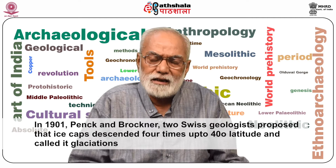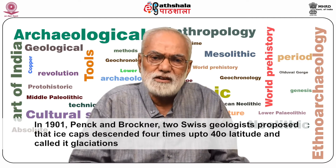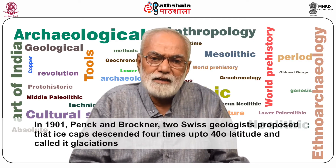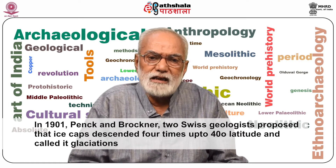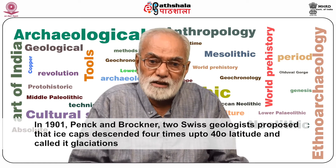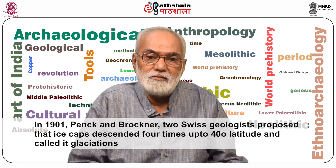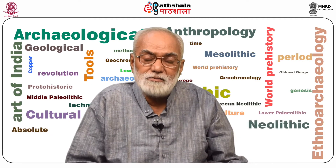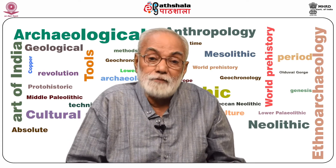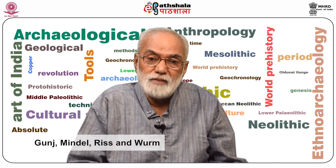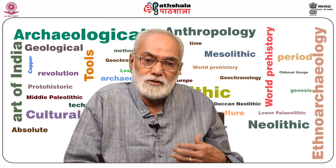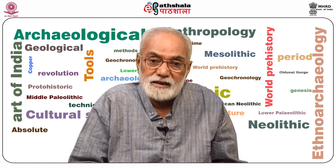In 1901, a man called Penk and another man called Bruckner, both Swiss geologists, came out with a very interesting proposal that there had been four times the polar ice cap descending up to almost 40 degrees latitude. The ice was so much that it came to the mid-latitudes, and they called them glaciations. The evidence of these glaciations was found on the banks of rivers in the Swiss Alps — the rivers are called Gunz, Mindel, Ries, and Wurm. So the polar ice cap came down to the mid-latitudes four times, and therefore four glaciations were identified.